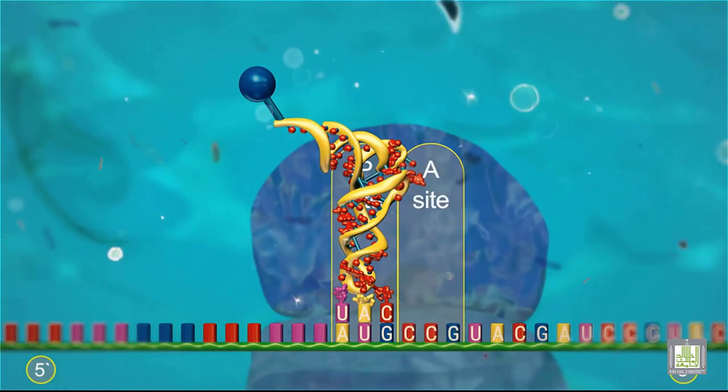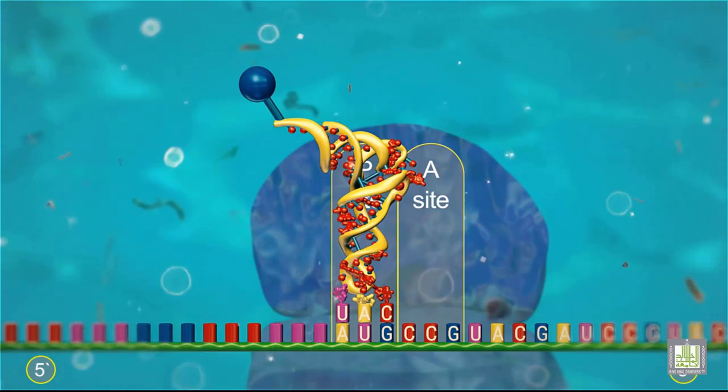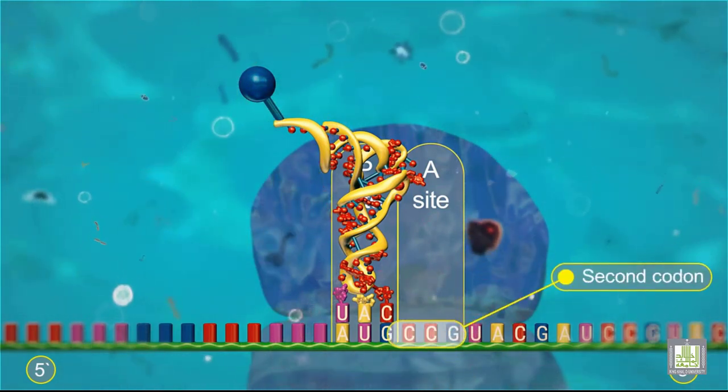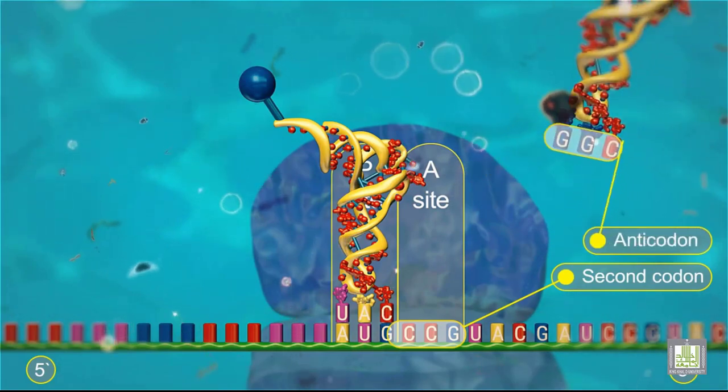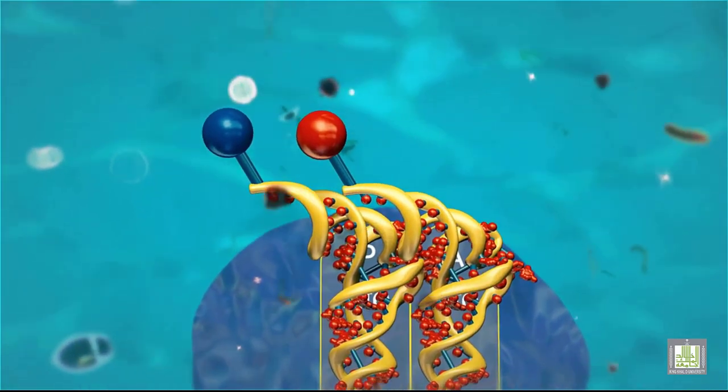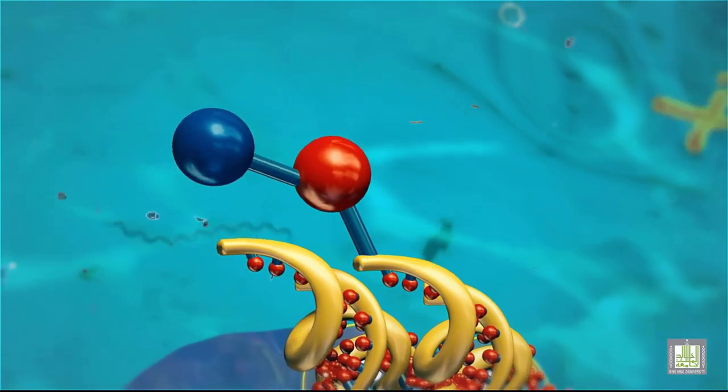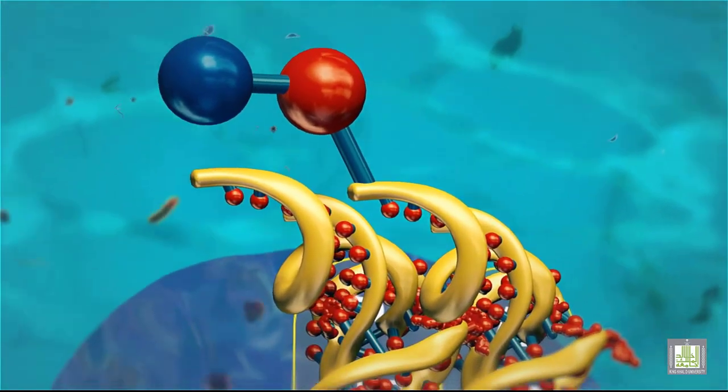The initiating transfer RNA, carrying its amino acid, binds to the P-site. A transfer RNA that recognizes the next codon and carries the second amino acid then moves into the A-site. The amino acid carried by the transfer RNA in the P-site is then joined to the amino acid carried by the transfer RNA that just entered the A-site.